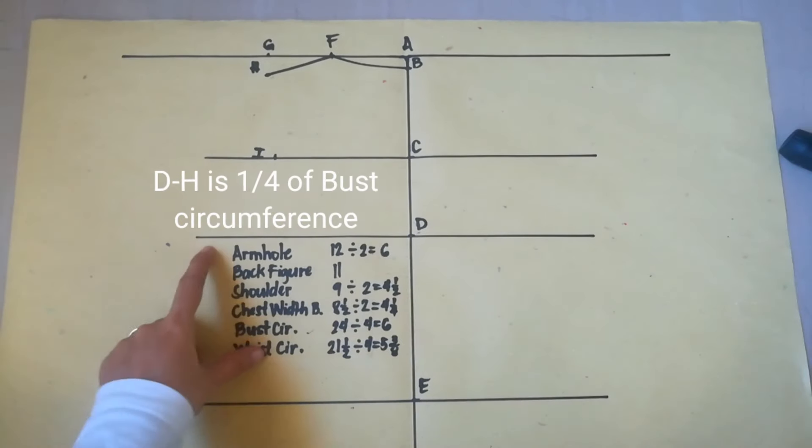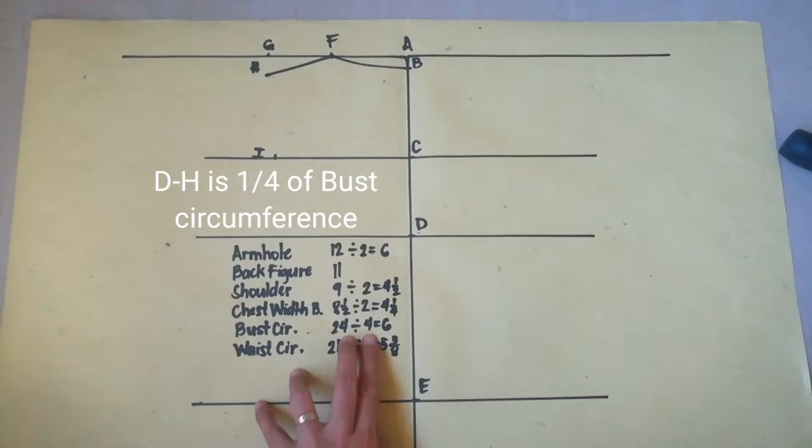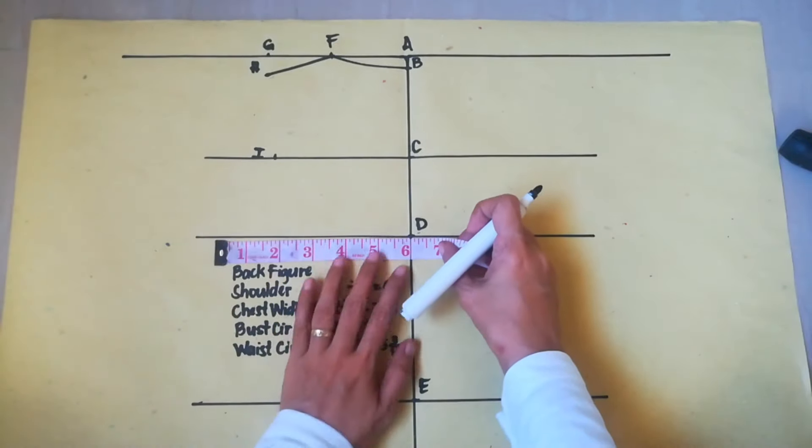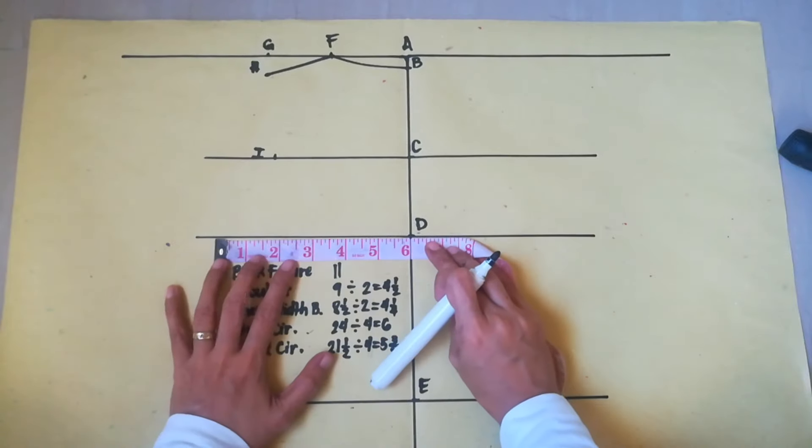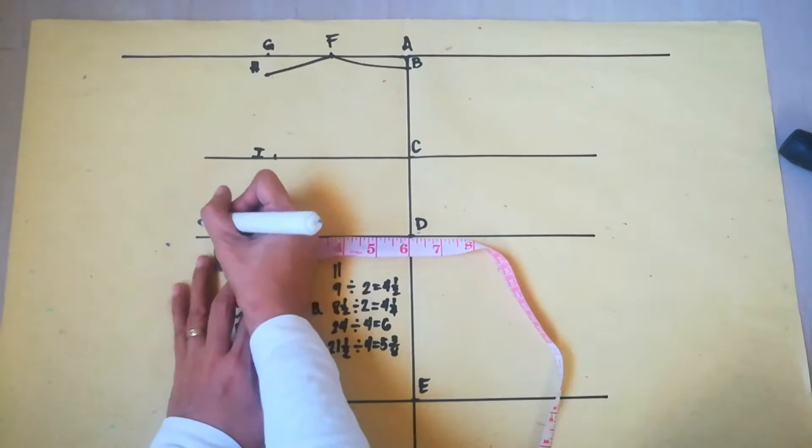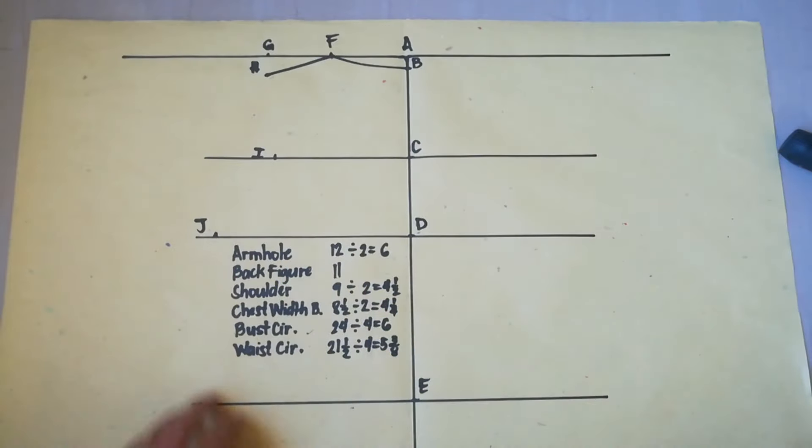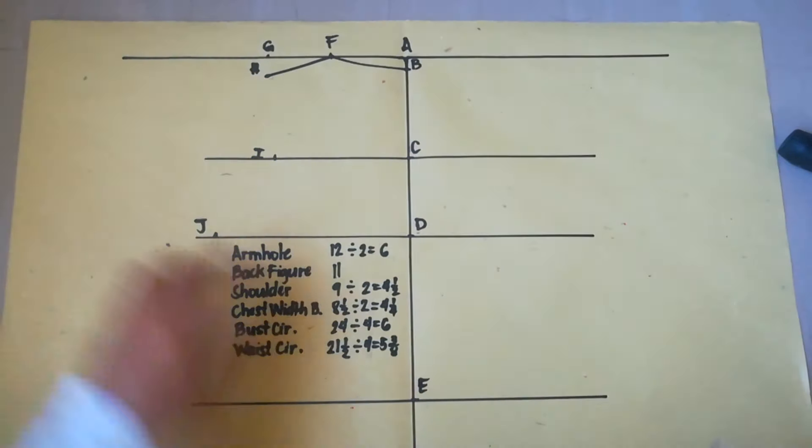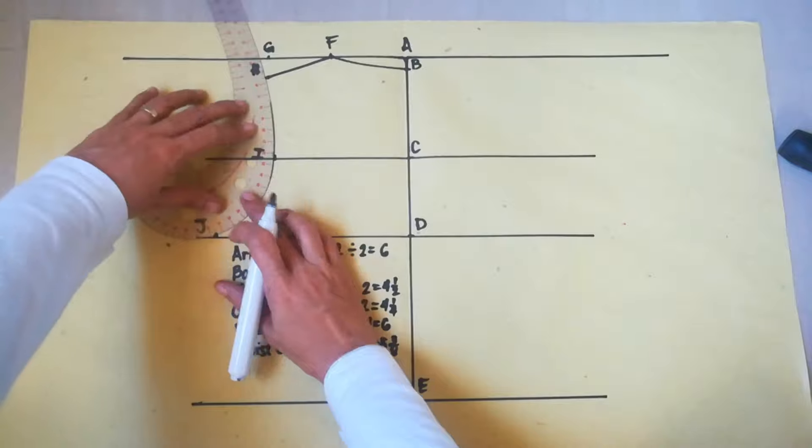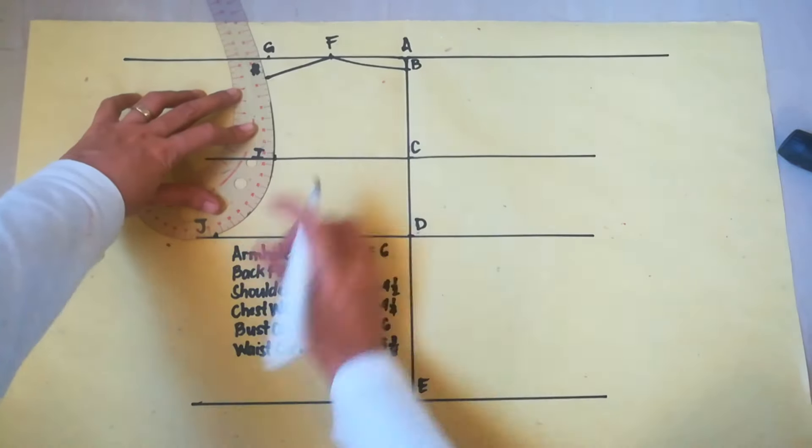Now, C to I is 1 half of chest width back. So, 8 and 1 half divided by 2 is 4 and 1 fourth. So, this is the 4 and 1 fourth. And then, mark it point I. Now, D to J is 1 fourth of bass circumference. So, 24 divided by 4 is 6. Point J. Now, connect points H, I, and J with French curve. Position the French curve hitting points H, I, and J.